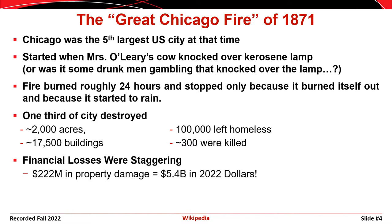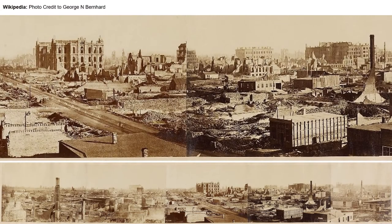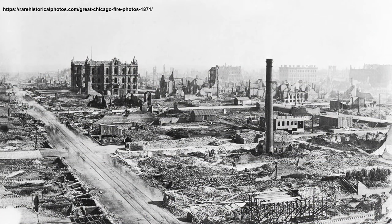$222 million in property damage at that time correlates to approximately $5.4 billion in today's dollars when adjusted for inflation. This photo shows what the city looked like after the fire was extinguished. The photo on the bottom shows a panoramic view of the city, and the photo on the top is actually a zoomed-in portion of the other photo showing the devastation.